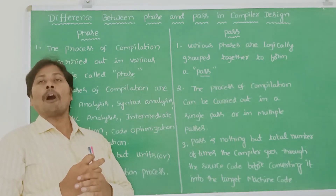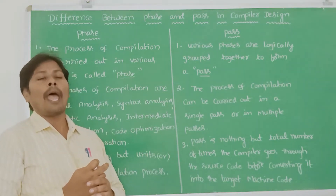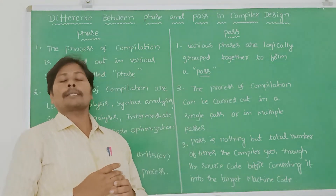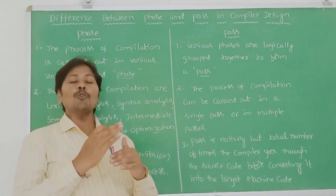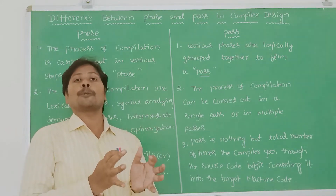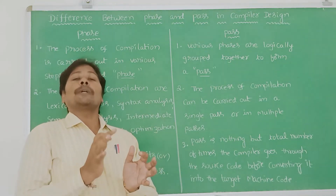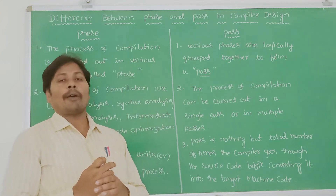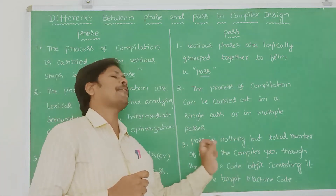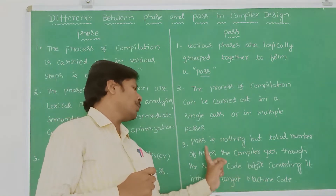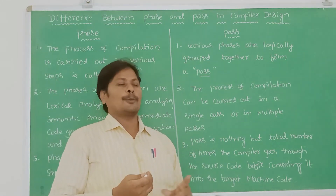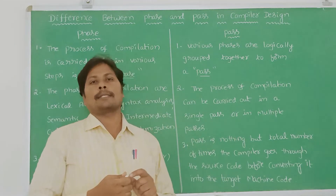The third difference: phase is nothing but units — these are the steps in the compilation process. Whatever steps we have to follow to compile the source program, those steps can be called as phases. Whereas in the case of pass, pass is nothing but how many number of times the compiler goes through the source program to get the target code.